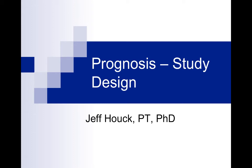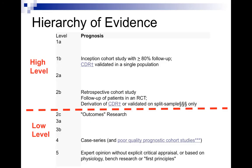This section on prognosis reviews the study designs specific to the hierarchy. Looking at the hierarchy with systematic reviews removed, we can see there are high-level and low-level studies. The high-level studies include an inception cohort study, a retrospective cohort study, a follow-up of patients on an RCT, outcomes research, and case series. Let's talk about the differences between these studies.